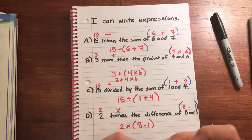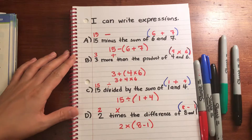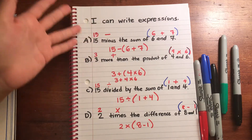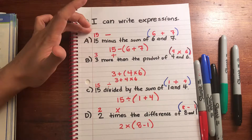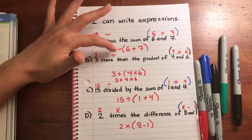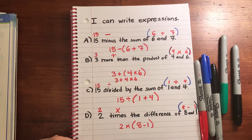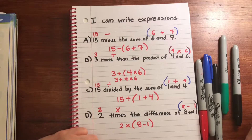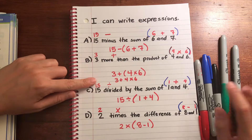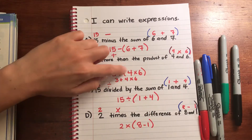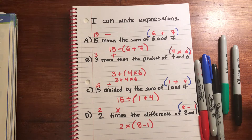Writing expressions really takes practice, but two helpful strategies: first, rewrite the numbers above the word form — if '15' is spelled out, rewrite it as the numeral. Then go back and look for math terms associated with an operational symbol: 'minus' is subtraction, 'more than' is addition, 'divided' is division, 'times' is multiplication. 'Difference,' 'sum,' and 'product' are answers to specific types of math problems — that's why I added parentheses. The only one that didn't need them was B, because order of operations already handles multiplication before addition. And that's it for writing expressions.